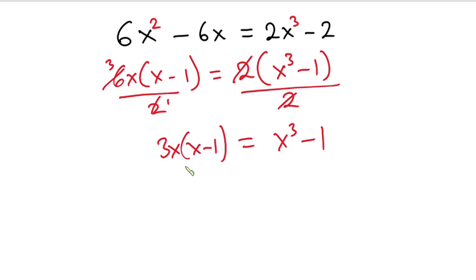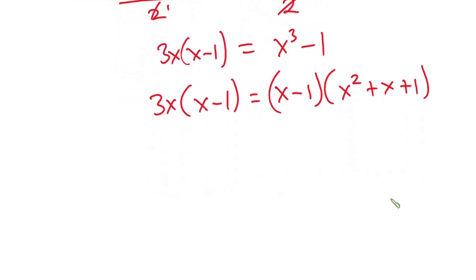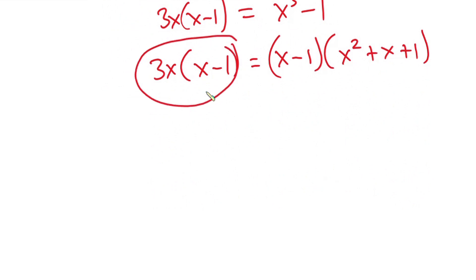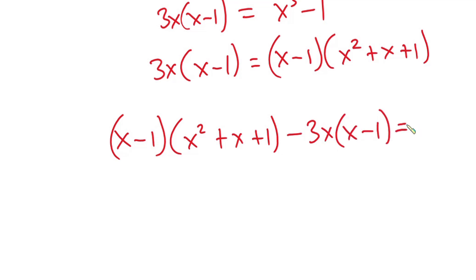From here, we have 3x into x minus 1 on the left-hand side. And this is equal to x to the third power minus 1, which can also be written as x minus 1 into x squared plus x plus 1. Now I'm going to move the left-hand side to the right, giving us x minus 1 into x squared plus x plus 1 minus 3x into x minus 1, and this is equal to 0.